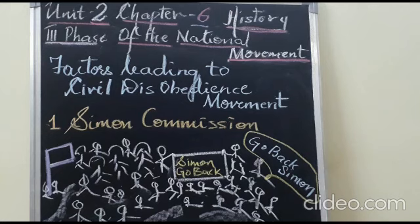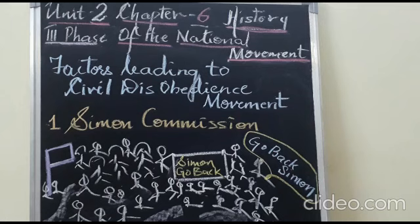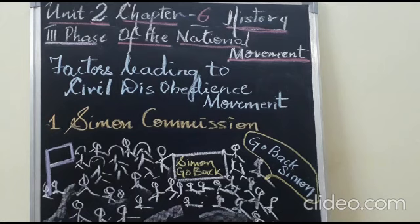The Civil Disobedience Movement was different from the Non-Cooperation Movement. The Non-Cooperation Movement was about not cooperating with the British government. The Civil Disobedience Movement, on the other hand, was a mass participation where civilians disobeyed the British government by paralyzing the administration and breaking some specific rules and regulations.